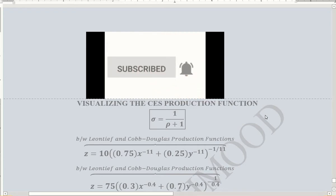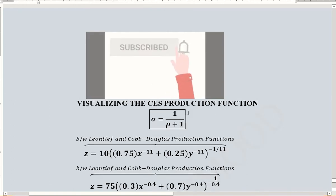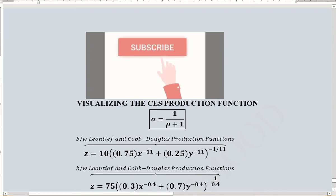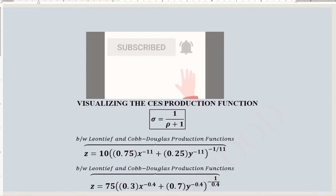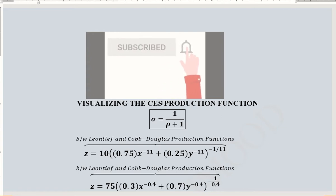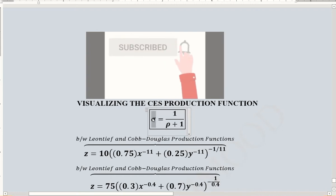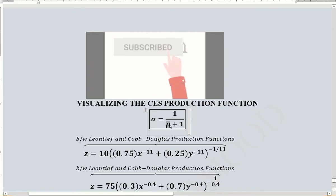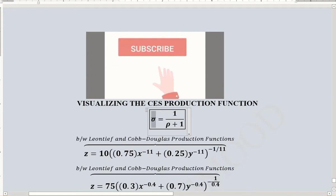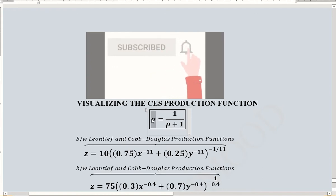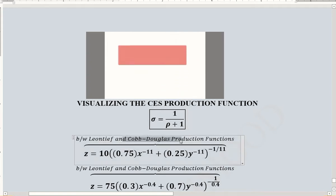The purpose of this video is to visualize the CES production function, and we know that this can be understood through the value of the substitution parameter and the elasticity of substitution. The substitution parameter rho determines the value of the elasticity of substitution, which allows us to identify the nature of the production function we are dealing with.